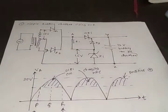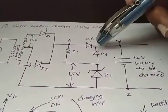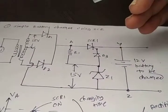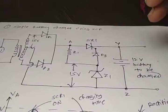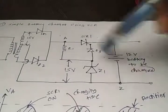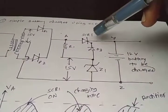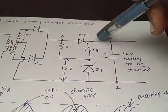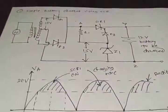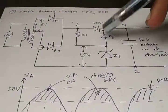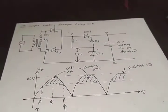When the battery is fully charged, for example at 14 volts, the cathode of the SCR is at 14 volts. However, the gate of the SCR is at 14.3 volts, so the gate is comparatively more than the anode side. This 0.3 volt difference is responsible for turning off the SCR. At the point where the SCR turns off, the charging period of the battery automatically stops. This is the simple battery charger circuit using SCR.